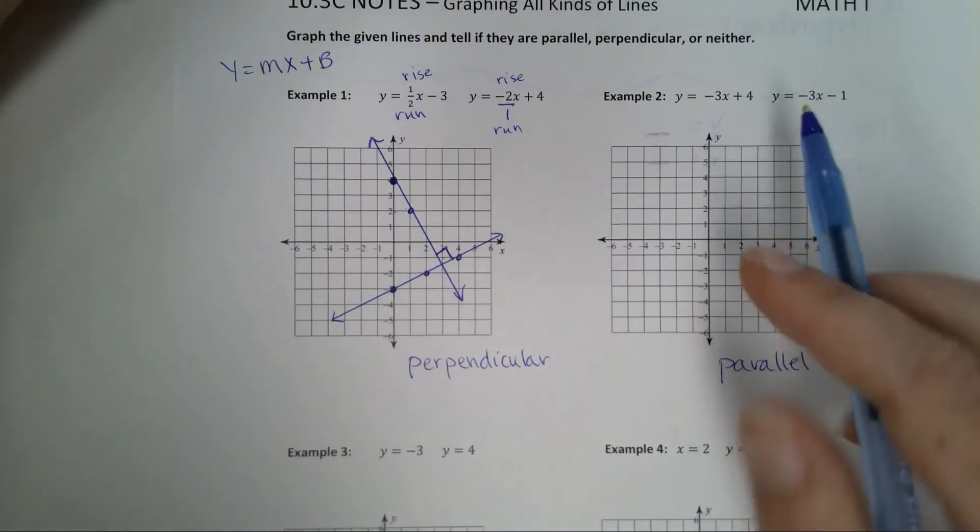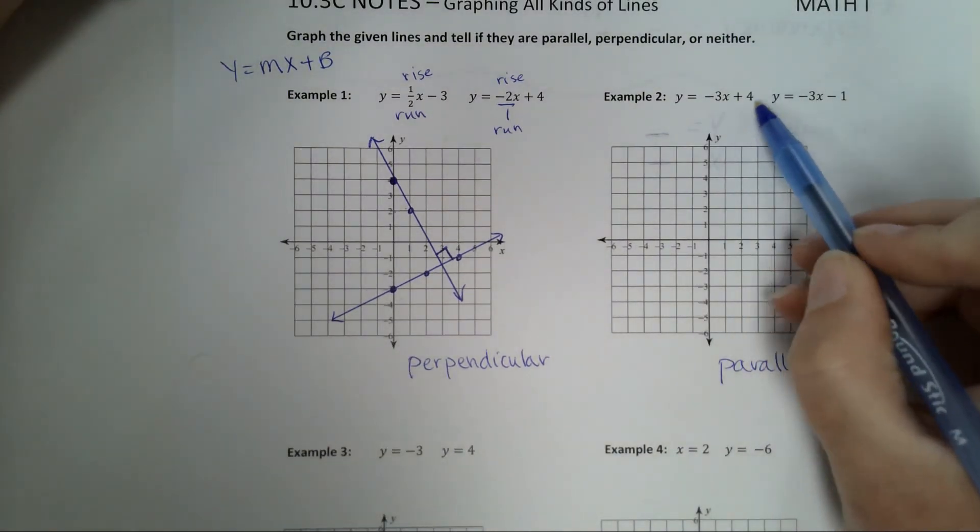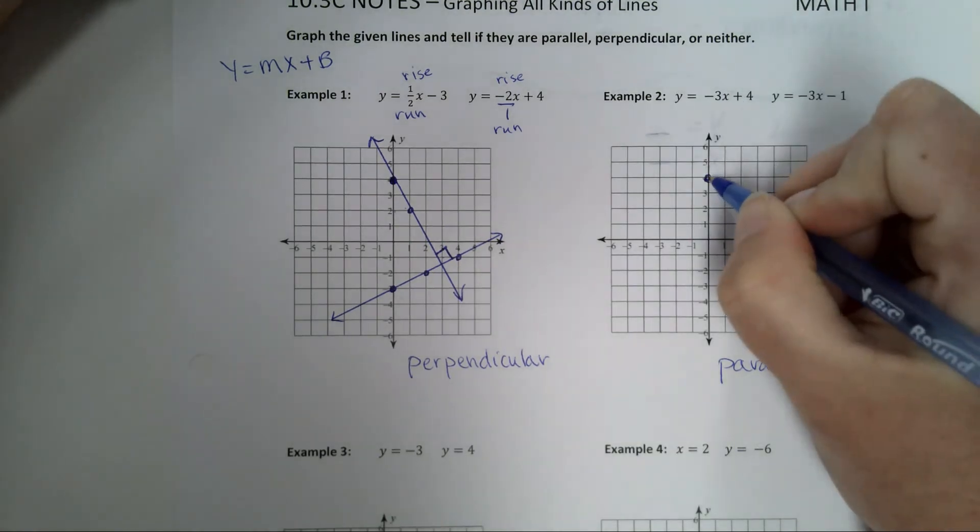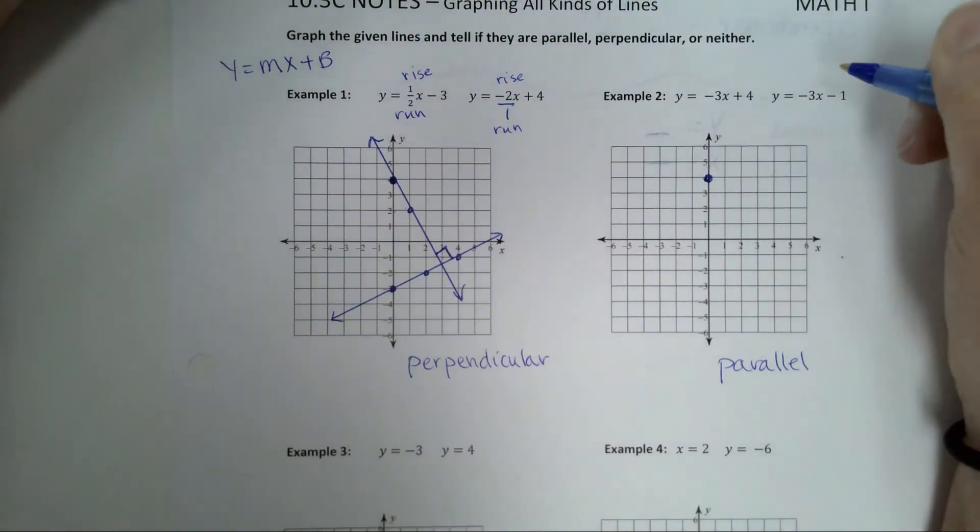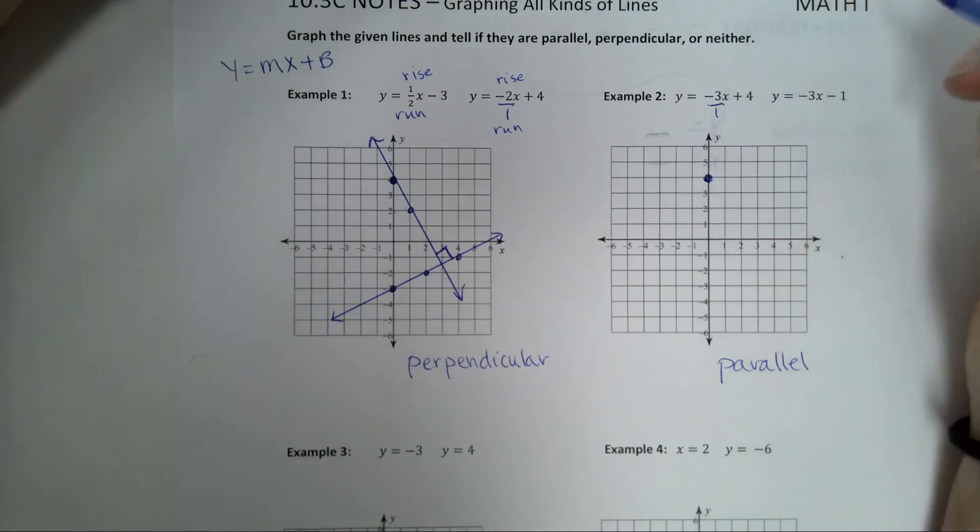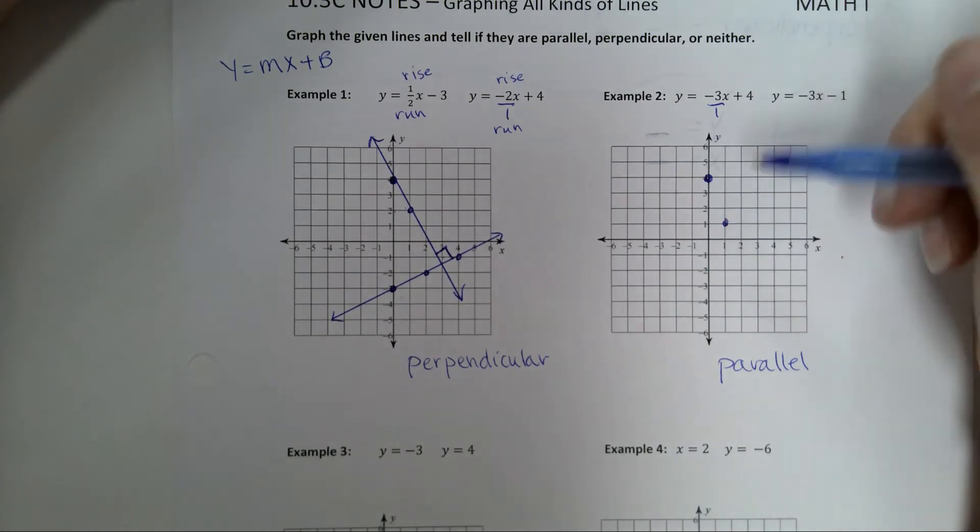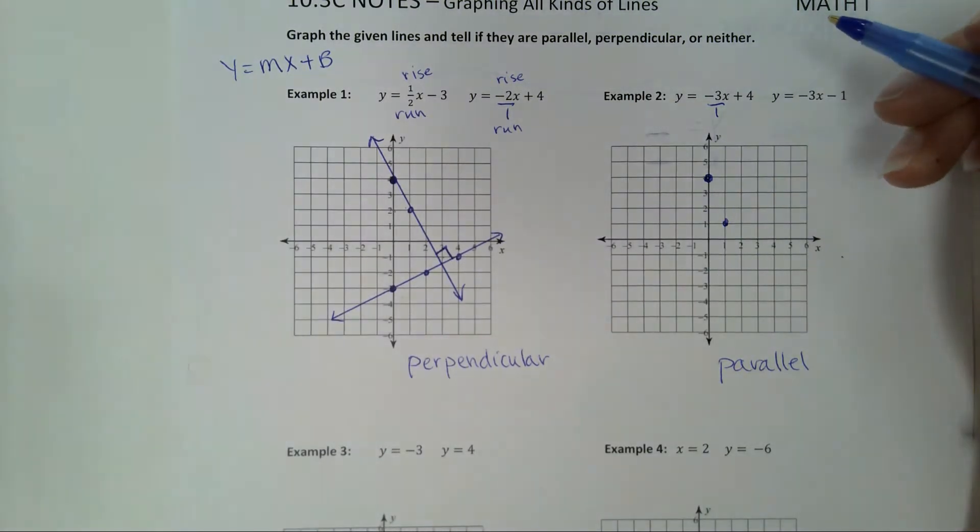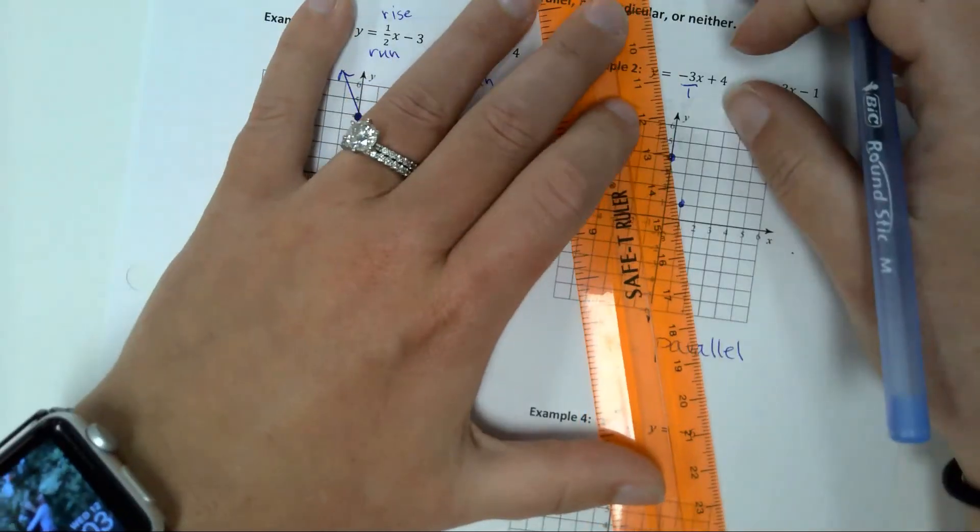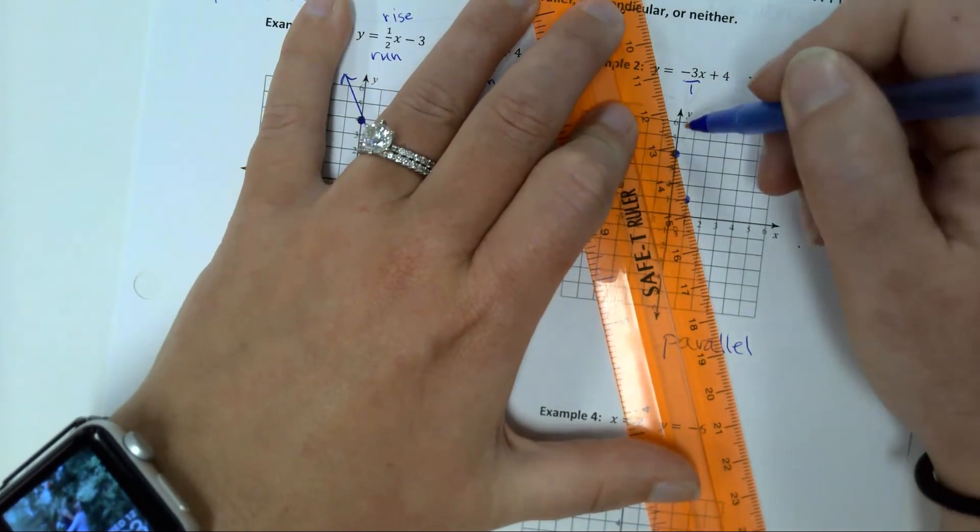When I'm graphing, I'm starting with my y-intercept. This one has a y-intercept of 4. So starting at 4, it has a slope of negative 3 over 1. Meaning go down 3, over 1. There's that one.